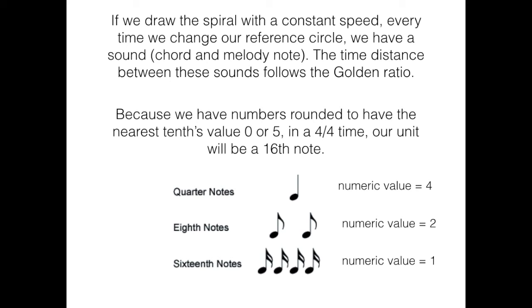If we draw the spiral with a constant speed, every time we change our reference circle, we have a sound, chord, and melody note. The time distance between these sounds follows the golden ratio. Because we have numbers rounded to have the nearest tenths value, 0 or 5, and a 4/4 time, our unit will be a 16th note.